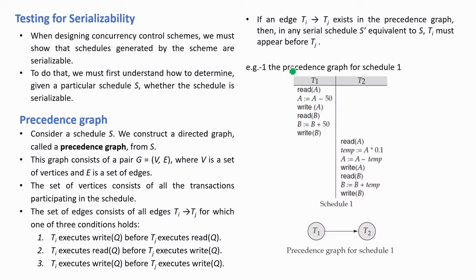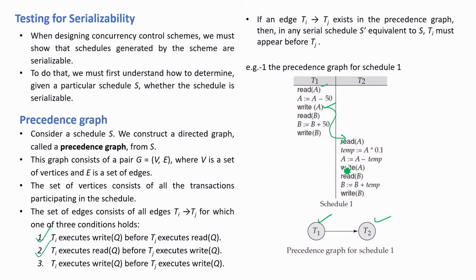Let's look at the precedence graph of schedule one. There are two transactions t1 and t2, so there are two vertices. We can see a read A and a write A — this satisfies the second condition for data item A. Also, there is a write A then a read A, which satisfies the first condition. So there is an edge from t1 to t2.